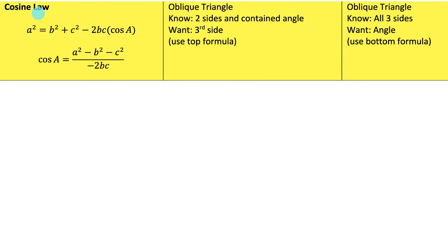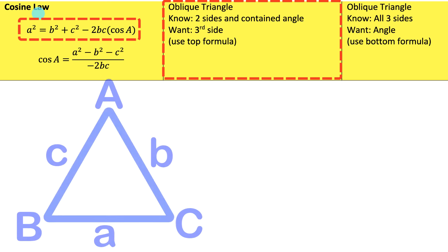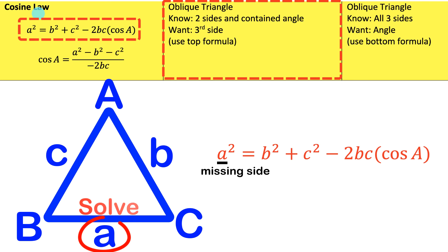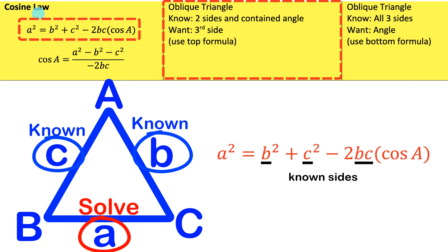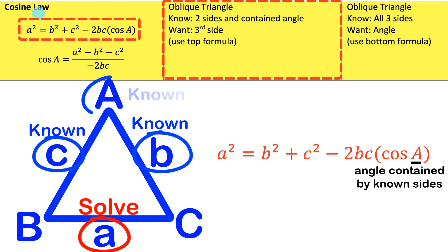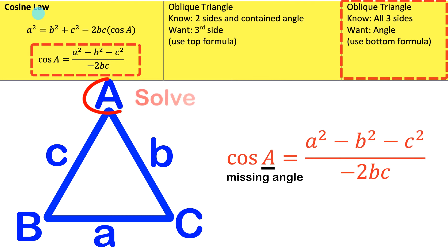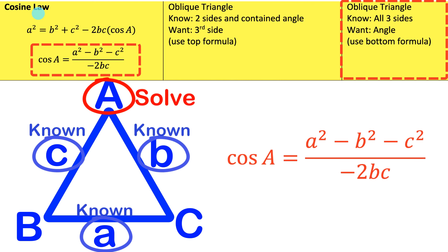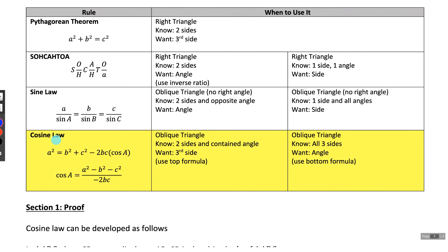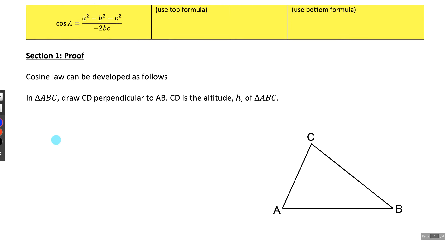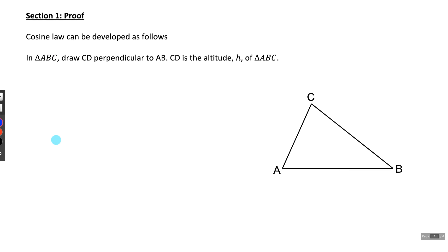There are two versions of cosine law. One version allows you to solve for a side in a triangle if you know the other two sides and the angle contained by those two sides. The other version allows you to solve for an angle if you know the length of all three sides. Before we start learning how to use these two versions, let me take you through a proof that shows where they come from.